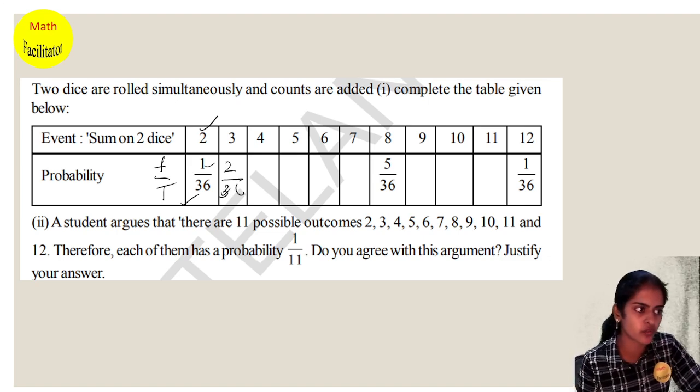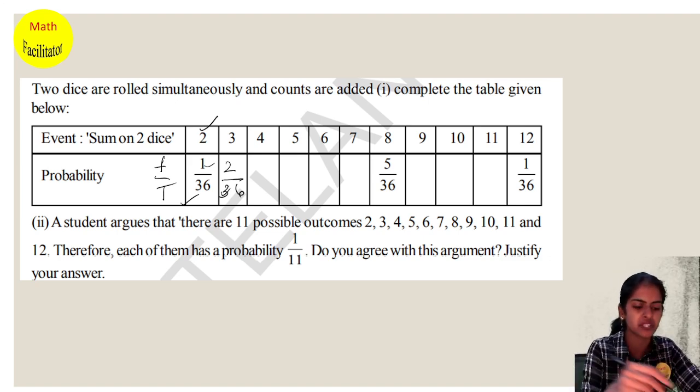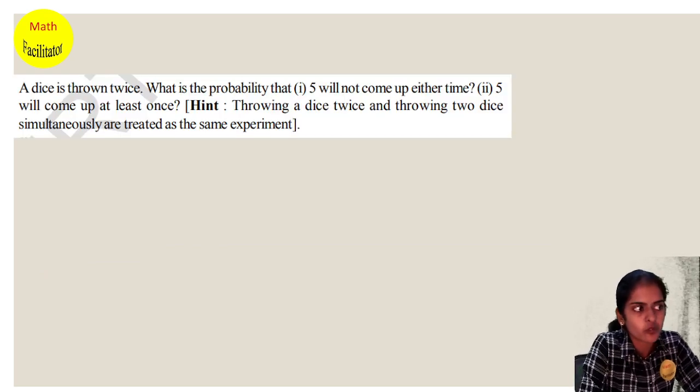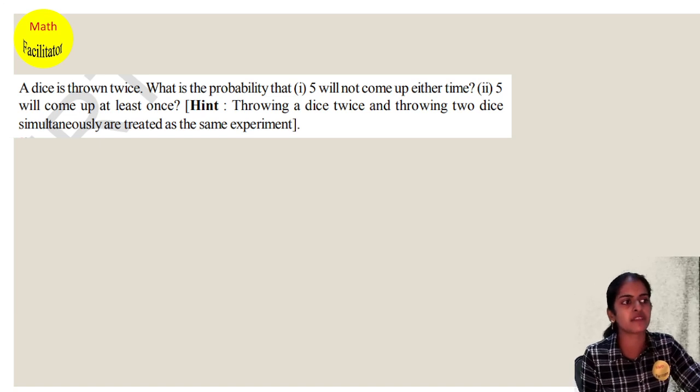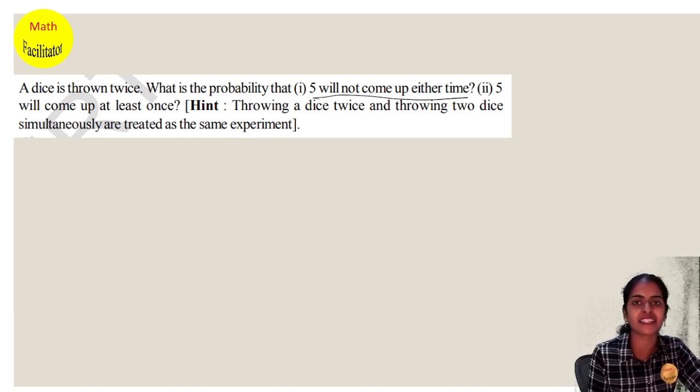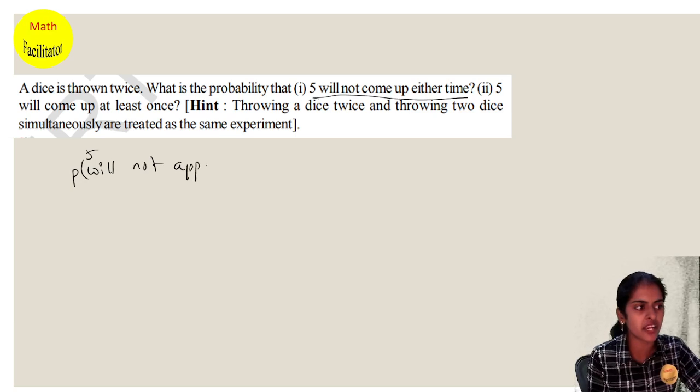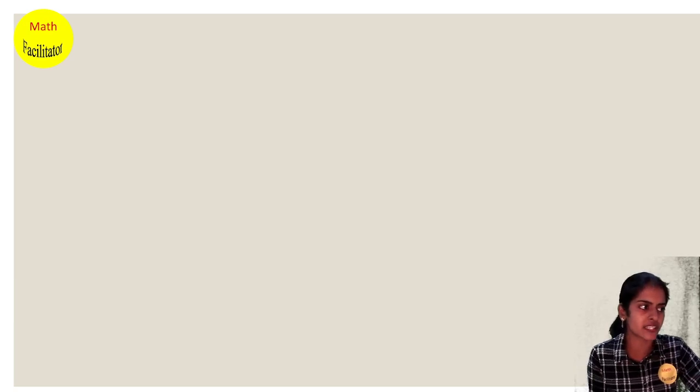Next question: A dice is thrown twice. What is the probability that five will not appear either time? So you should not get five either time. When will five not appear? Let's go back and see.